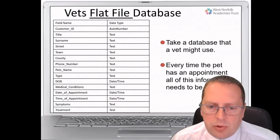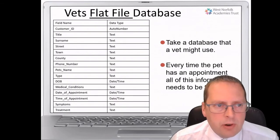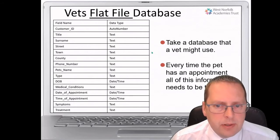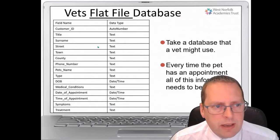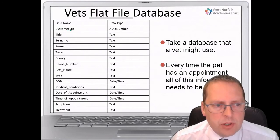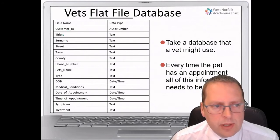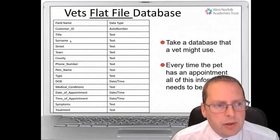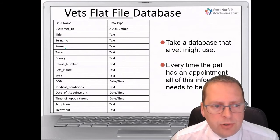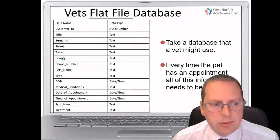We're going to use an example of a vet's flat file database. They've got a customer ID, a title — Mr, Mrs, Ms, etc. — a surname, and an address with street, town, and county, all separated into different fields. The street name is one field, the town is another, and the county is another. This is useful when they want to search for all people who live in Norfolk — they just look at the county field.